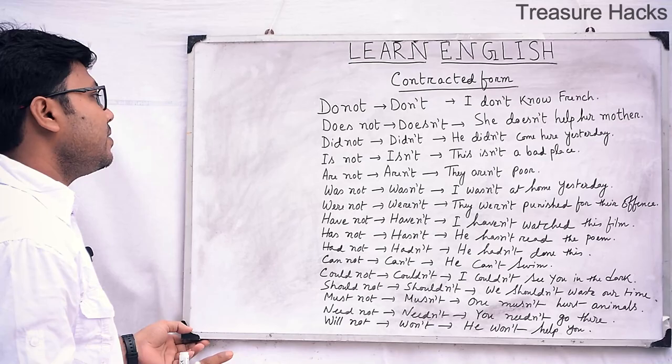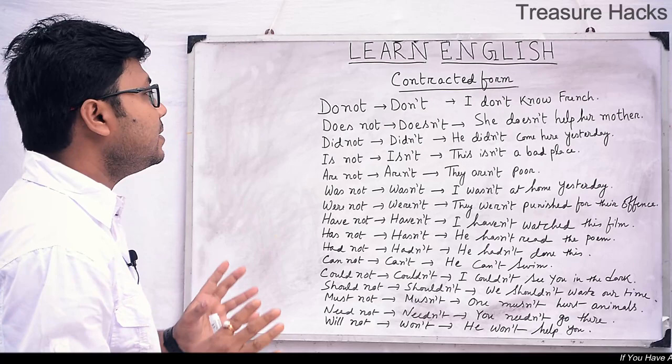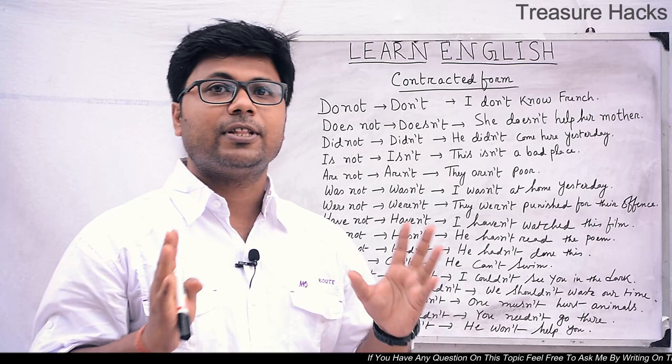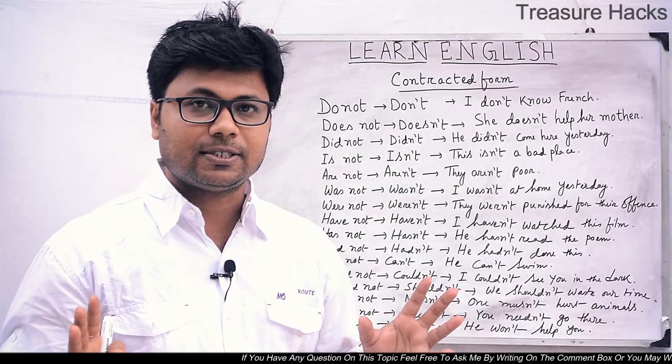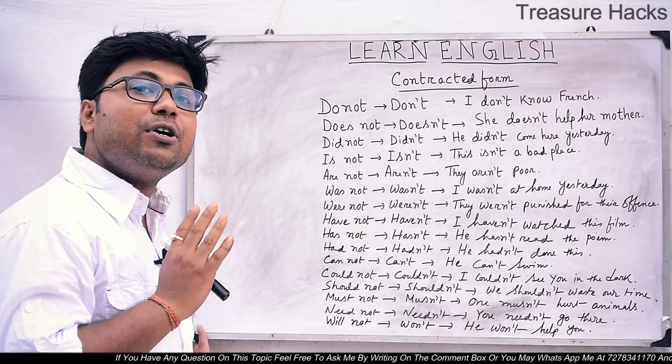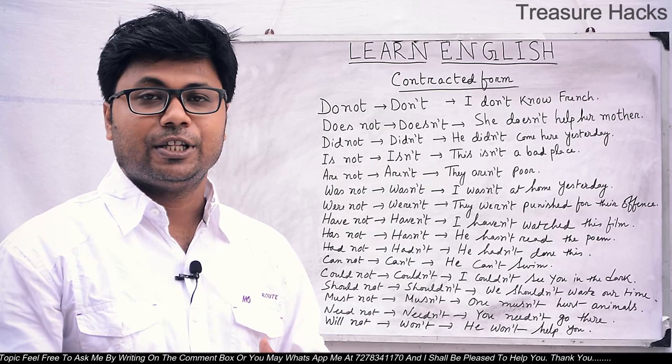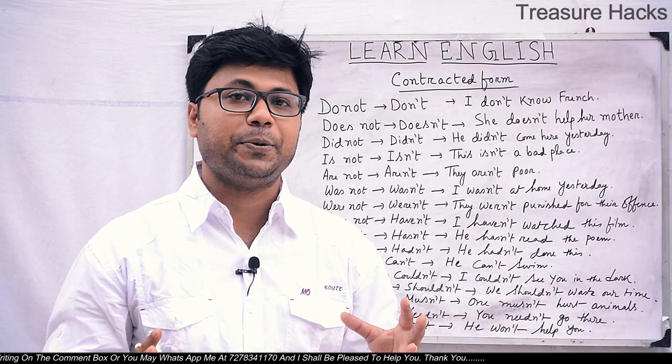'Is not' in contracted form is 'isn't'. For example: This isn't a bad place. 'Are not' is 'aren't' — They aren't poor. 'Was not' is 'wasn't' — I wasn't at home yesterday. 'Were not' is 'weren't' — They weren't punished for their offense.